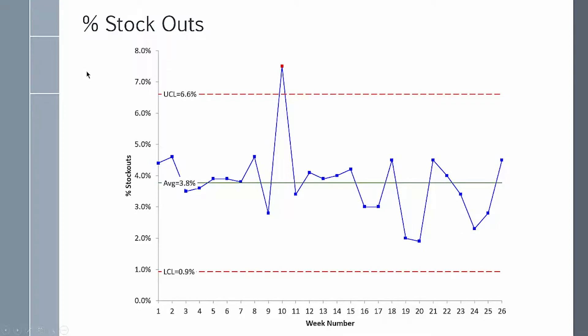Here's another example for a control chart on distribution. It's percent stock outs. It's measuring the percent of time you don't have a piece or don't have something in stock that you're supposed to. And you can see our average is about 3.8%, but we have one week where we had an out of control point, over 7% of our material was a stock out.